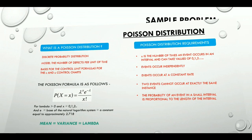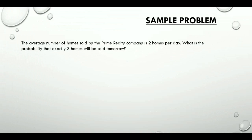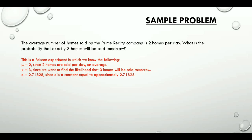Now, let's look at a sample problem. The average number of homes sold by the Prime Realty company is 2 homes per day. What is the probability that exactly 3 homes will be sold tomorrow? This is a Poisson experiment in which we know the following: mu is 2 since 2 homes are sold per day on average. Lowercase x is 3 since we want to find the likelihood that 3 homes will be sold tomorrow. And e is a constant approximately equal to 2.71828.